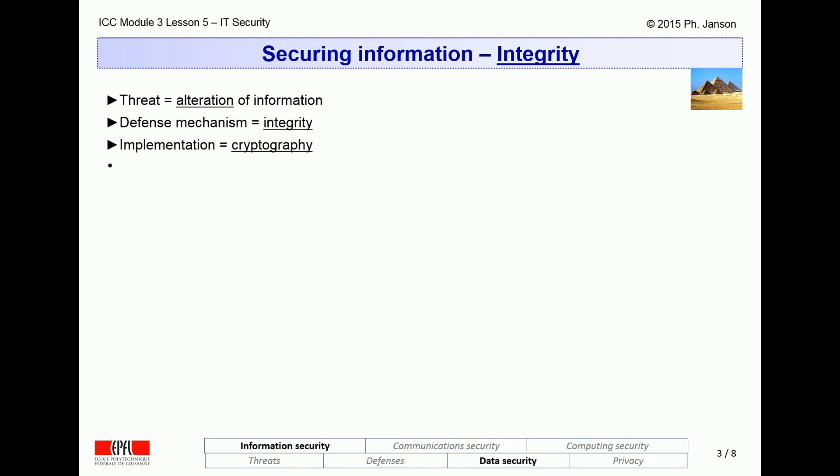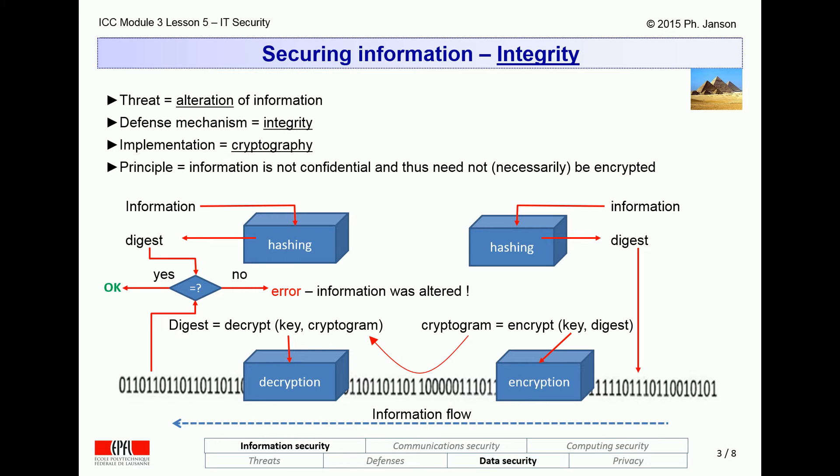This is again achievable with cryptography, and the principle is illustrated in this slide, to be considered from right to left. Assuming we are only concerned about integrity and not confidentiality, the information itself need not be encrypted — we just need to ensure it cannot be altered. This is achieved by passing the information through a hashing algorithm, which computes a complicated mathematical summary called the digest. This digest is then encrypted, typically with a symmetric algorithm using a secret key, and stored or transmitted with the information.